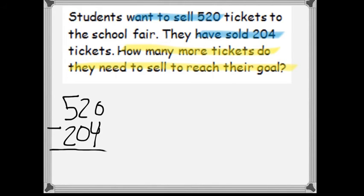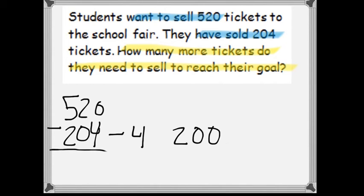Now, I don't like to regroup. So, in order to make these numbers more friendly so you don't have to regroup, we are going to move them back on the number line. If I move 204 back 4, that will give me a much friendlier number to subtract — 200. And since I moved the bottom number back 4, I have to move the top number back 4 as well. So 520 back 4 is 516.